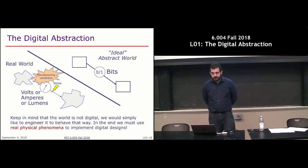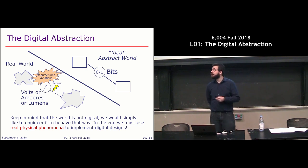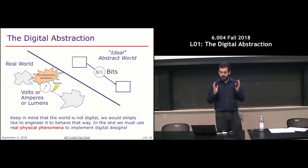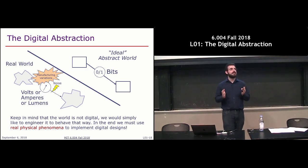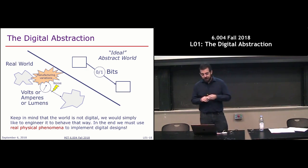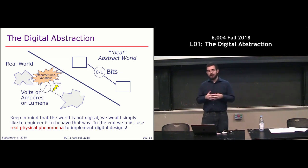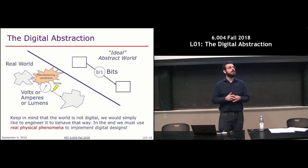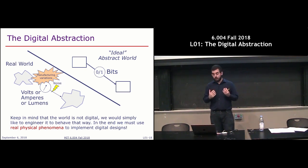We want to get away from this world of analog systems with noise, manufacturing variations, and so on, and go towards an ideal abstract world where we're manipulating bits reliably. In the rest of the lecture, we're going to derive the encoding of bits into ranges of digital values in a way that we can do this robustly. But always keep in mind that the world isn't actually digital — if the amount of noise exceeds what these systems can tolerate, they will start misbehaving.